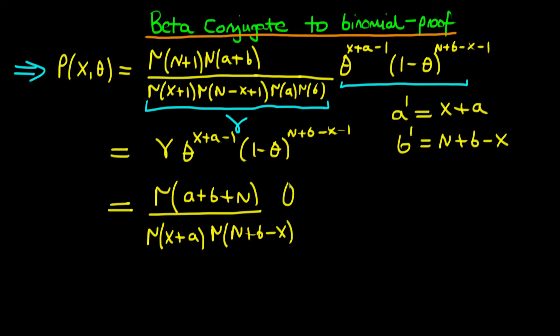And this whole expression times what we have before, which is theta to the power x plus a minus one, times one minus theta to the power n plus b minus x minus one. But remember that we can't just do this for free. Whatever we multiply through by, we need to divide through by it in order to ensure that our expression remains as it did before.